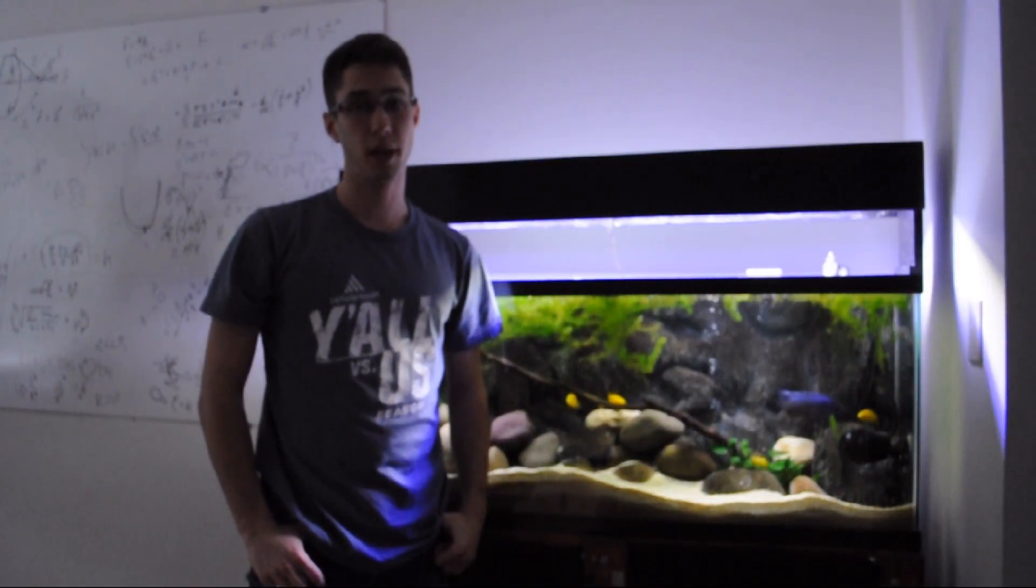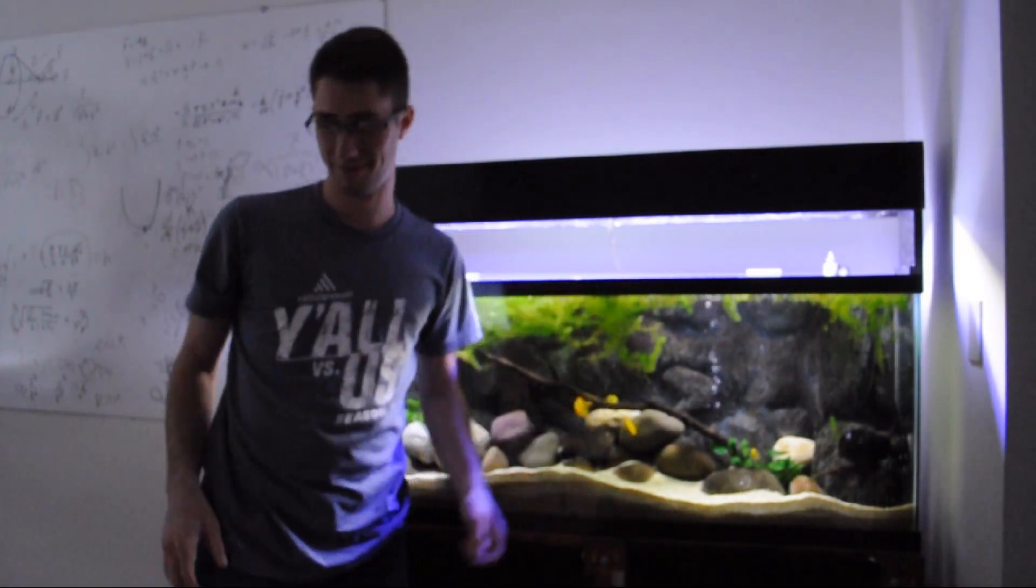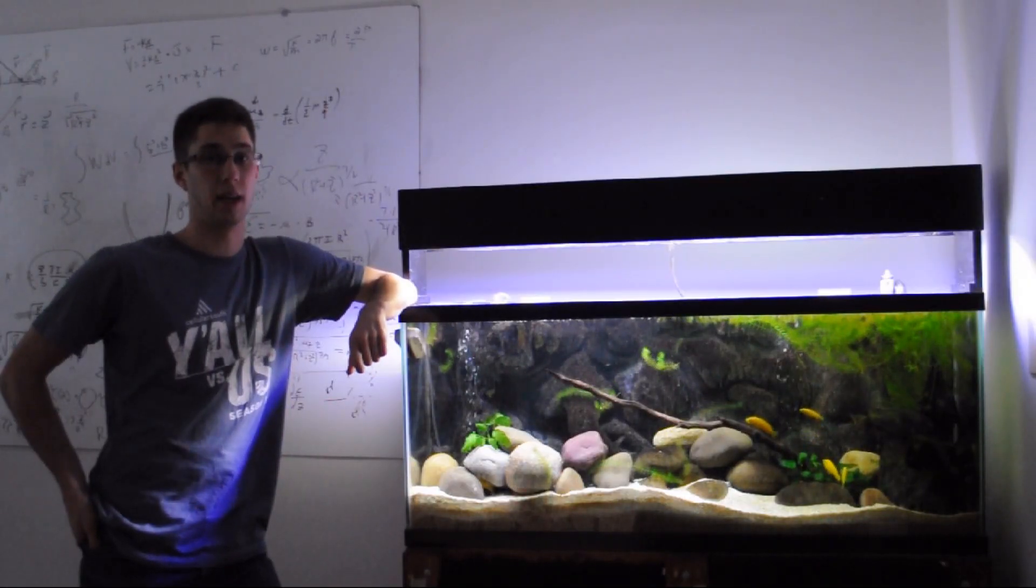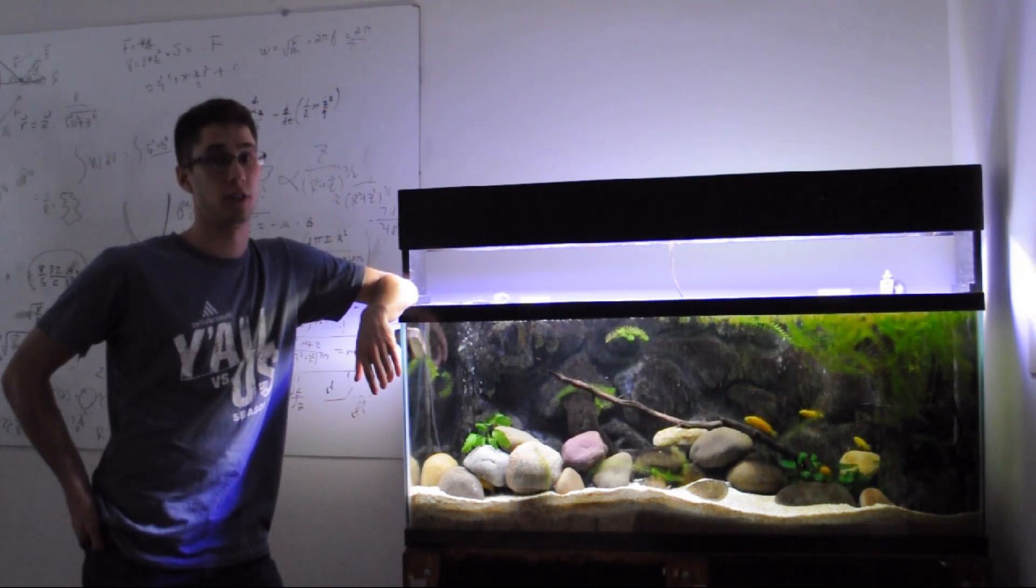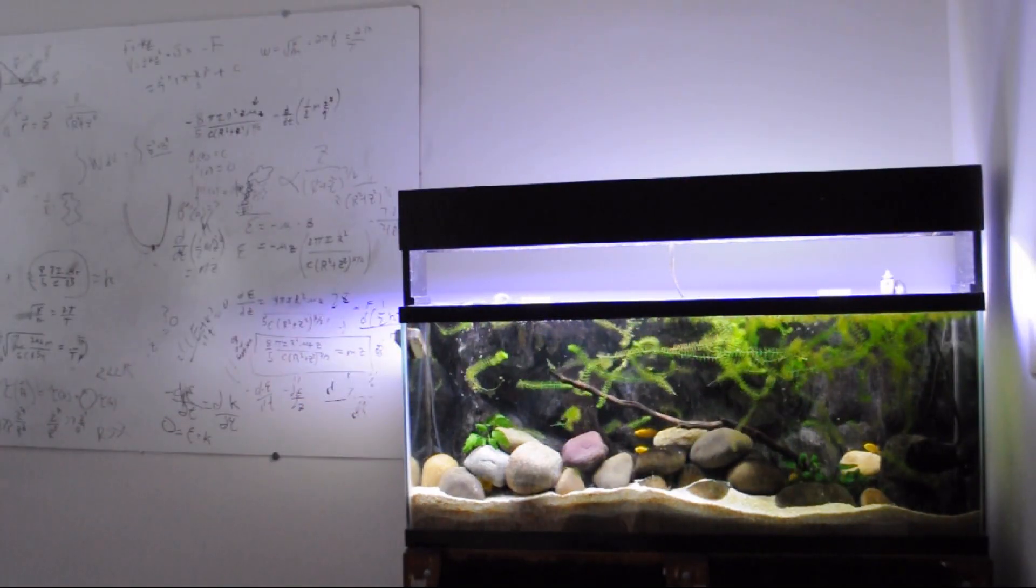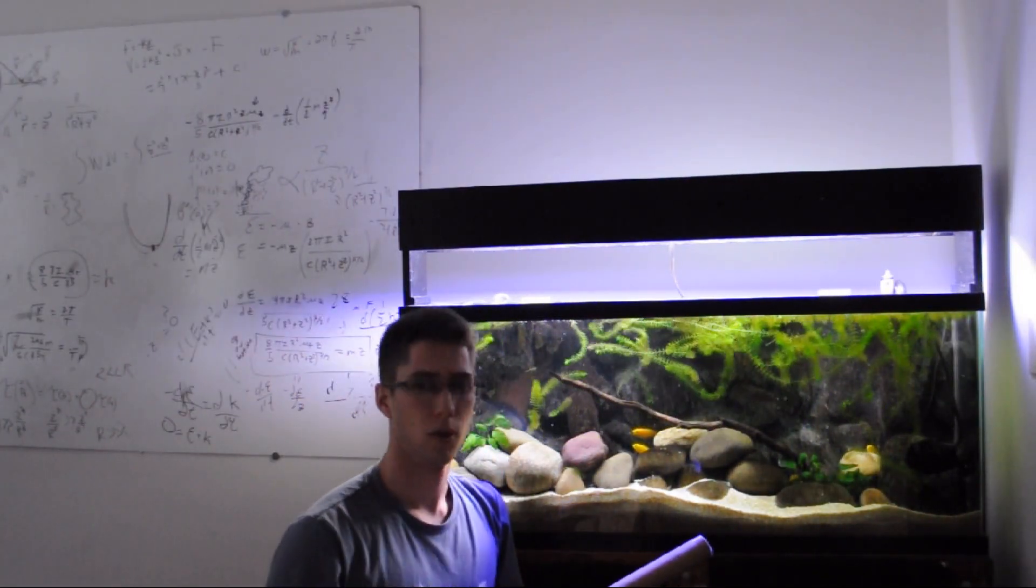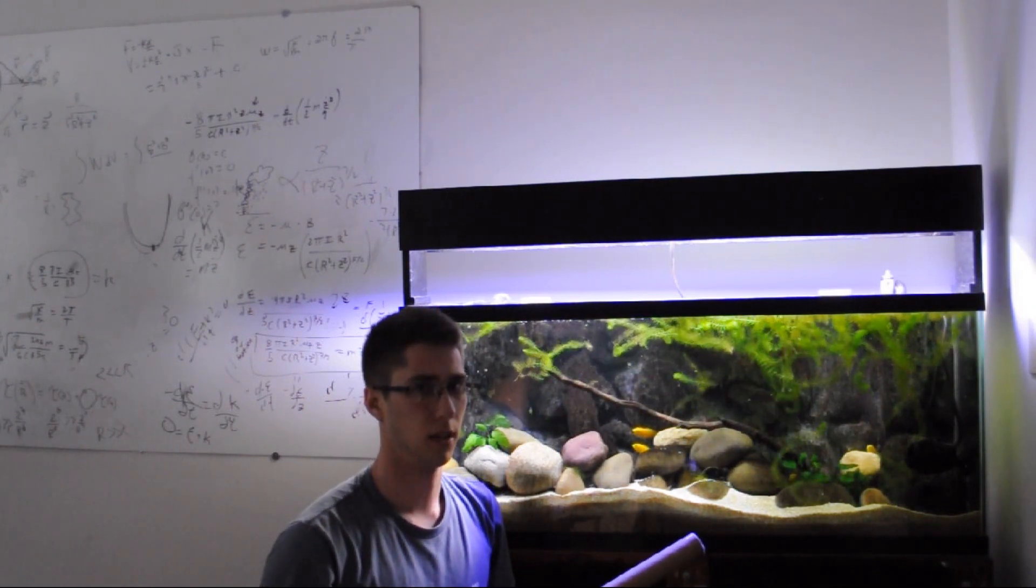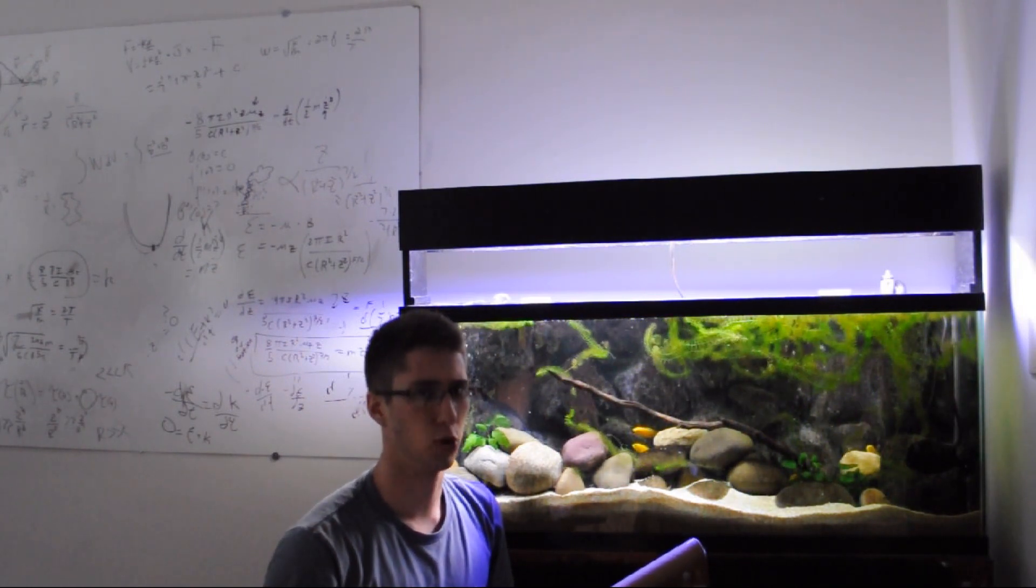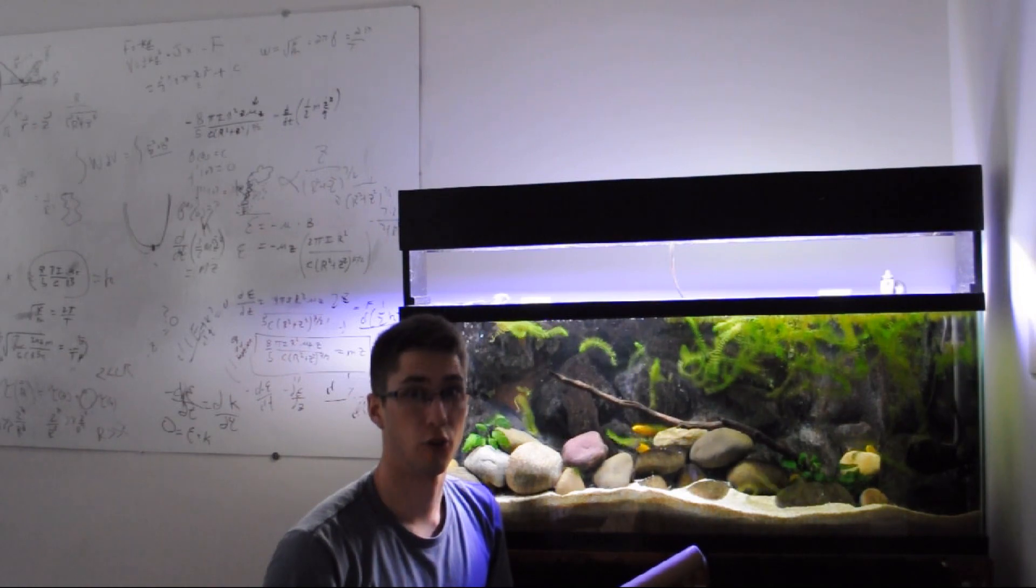How are fish weighed? With scales. Which fish go to heaven when they die? Angel fish. What's orange on the outside, filled with water, and blows up buildings? A fish tank.